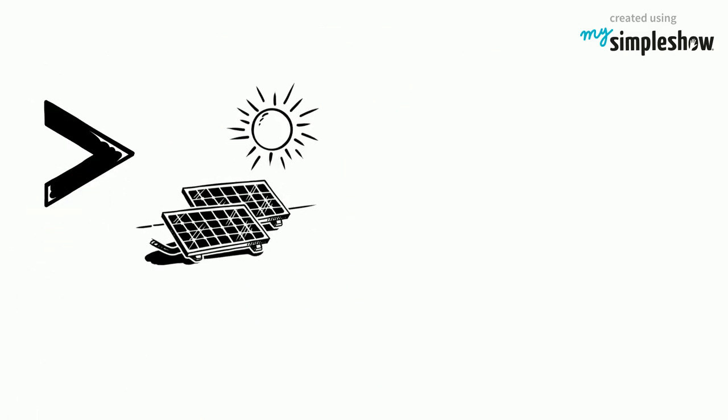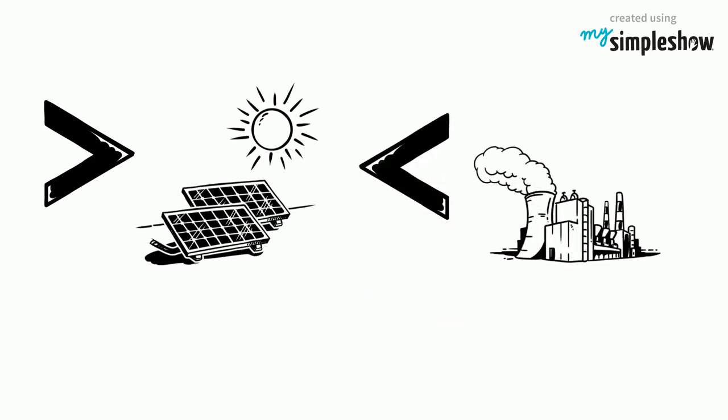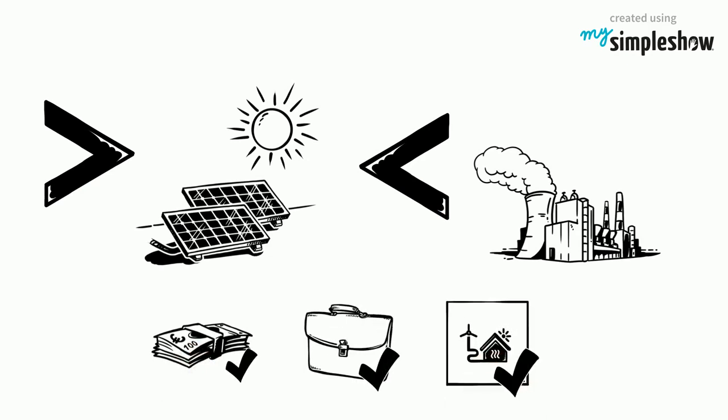The more solar electric power systems in a general area, the less capacity a utility needs to build. This ultimately saves money, creates jobs, and gives the area a clean, green source of energy.